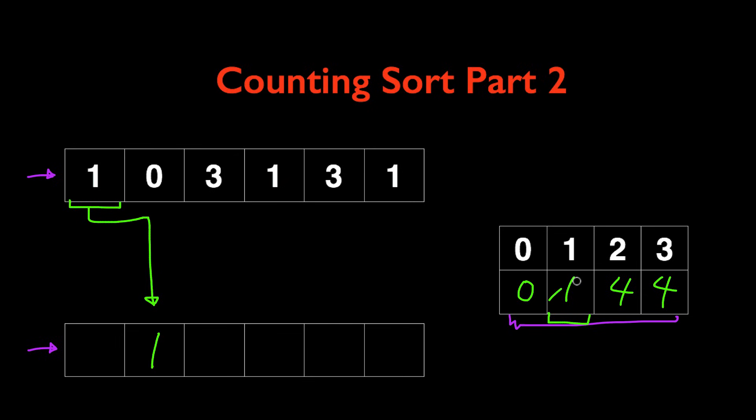Then we're going to increment our starting index by 1 and it becomes 2, and this is so that when we look at the second instance of the number 1, we'll know that it should go to the index 2 instead of 1, and then we're going to increment it again.